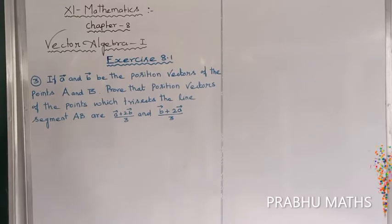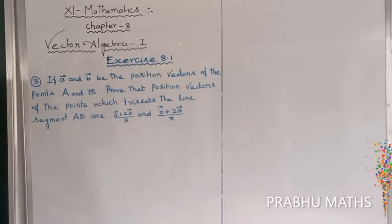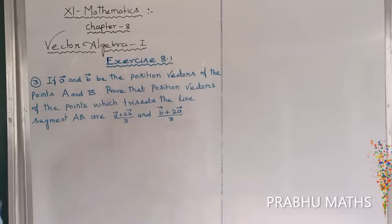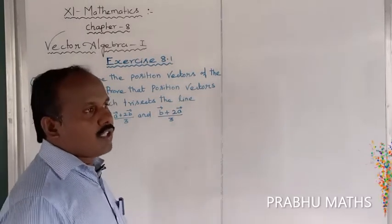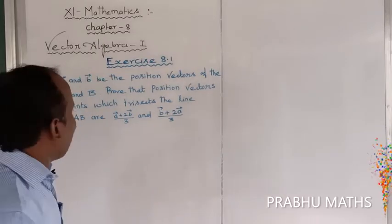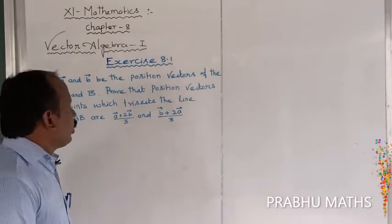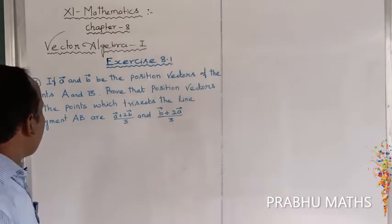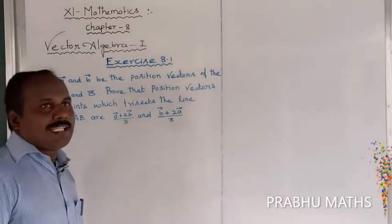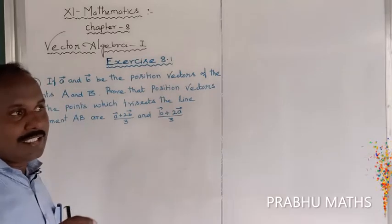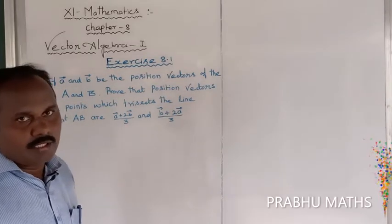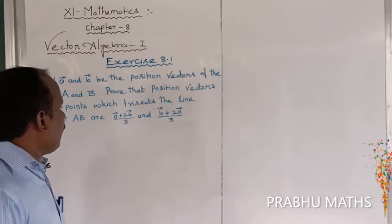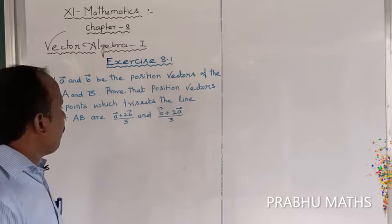X is a point — this is the third sum. If a vector and b vector be the position vectors of the points A and B, prove that the position vector of the point which trisects the line segment AB. The line segment AB is divided into trisection, that is three parts. The trisection points give position vectors: a vector plus 2b vector by 3, and b vector plus 2a vector divided by 3.